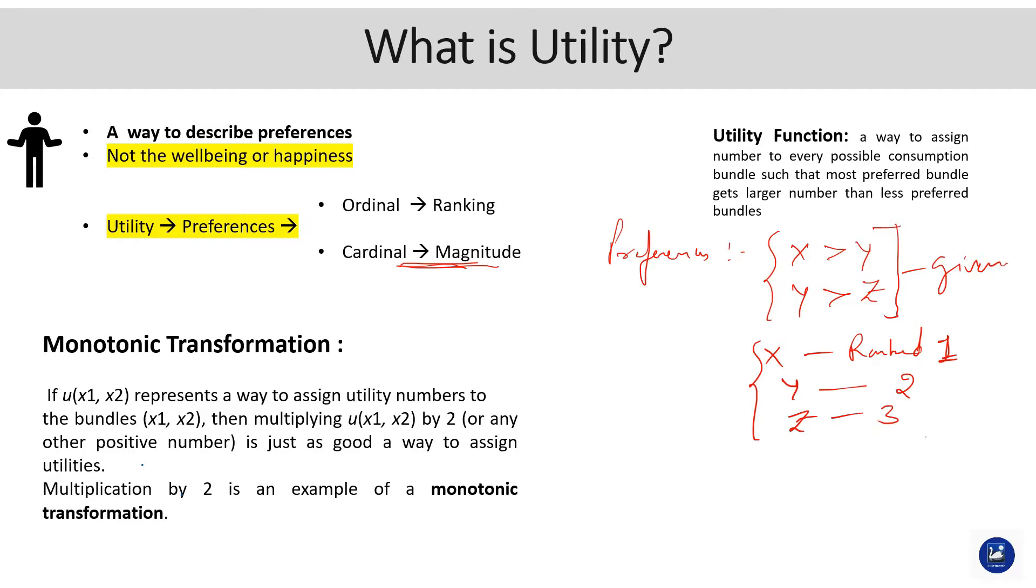If we try to explain in terms of magnitude, for example, if X is preferred over Y, I accord a value of 20 in terms of magnitude to the utility derived from X. Then for Y it's a little less, say 15, and for Z it's 10.